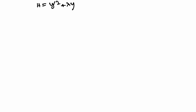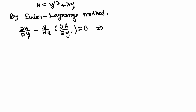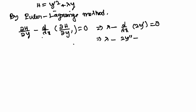By the Euler-Lagrange method we get: del h / del y minus d/dx of del h / del y-dash equals 0. This gives lambda minus d/dx of 2y-dash equals 0, which gives lambda minus 2y-double-dash equals 0. So we get y-double-dash equals lambda over 2.